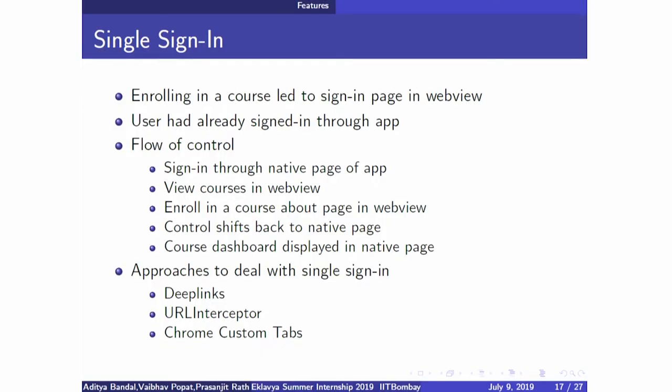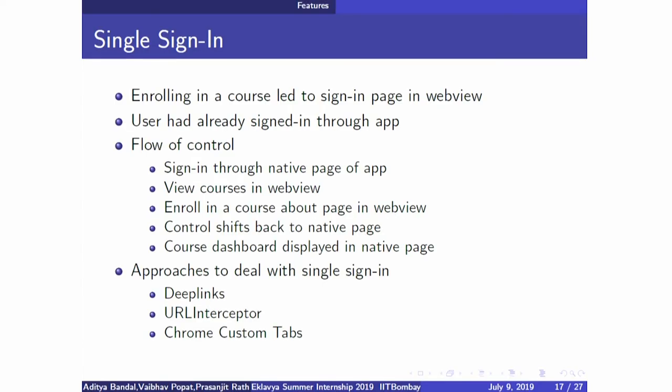Another important functionality is the single sign-in feature. The problem was that the enrollment/discovery page is in a web view, but the courses page showing enrolled courses is in native. If a user is already logged in natively, they should not have to log in again while enrolling. We had to skip the sign-in page that appears in the web view. We found two to three ways to do this, but proceeded through deep links.